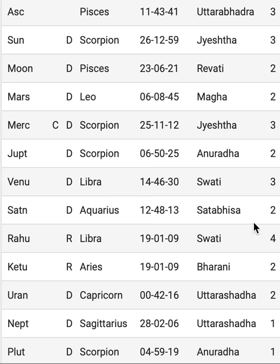Saturn is in Shatabhisha but in the 2nd pada. I have seen that when Saturn is associated with the 2nd pada, the person cannot be superficial — he has to be very sure of what he is doing, otherwise he might be caught. Therefore the person has to be very meticulous and detail-oriented, which he definitely was.